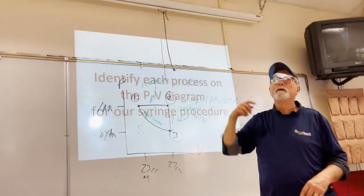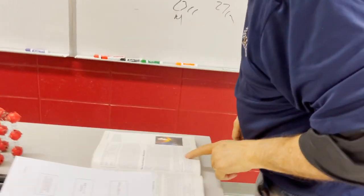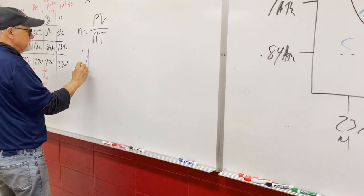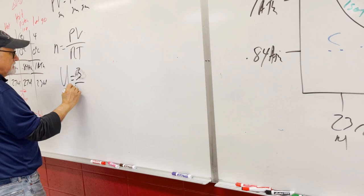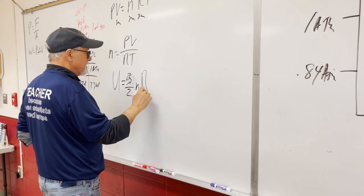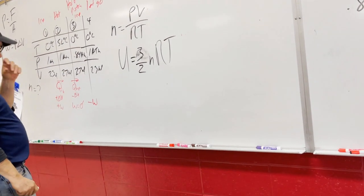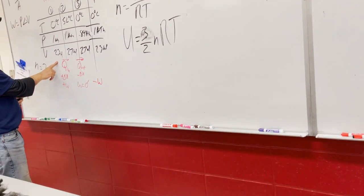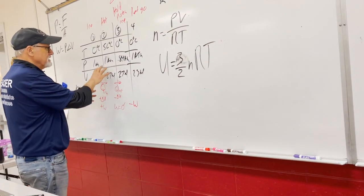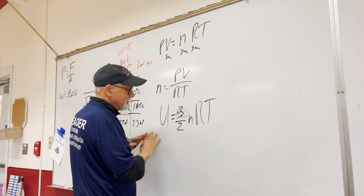The internal energy of the system at any particular moment is U = (3/2)nRT — three halves times the number of moles, times R, times the temperature. So pressure and volume have no direct impact on internal energy; it's reflected entirely in the temperature.